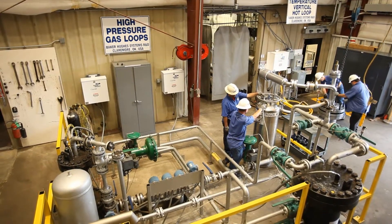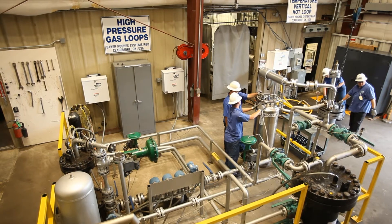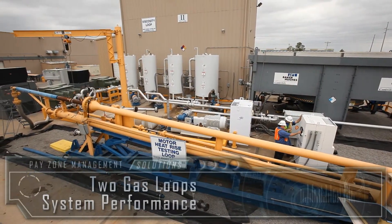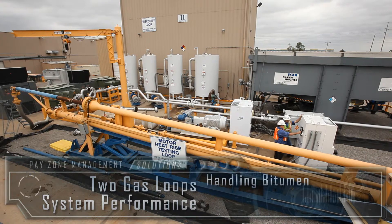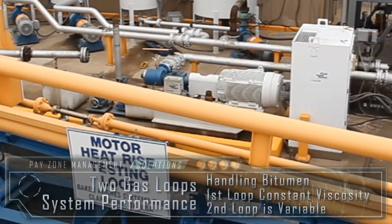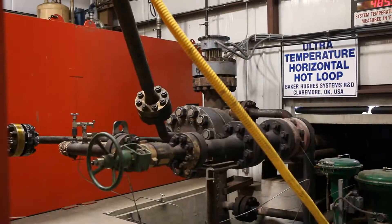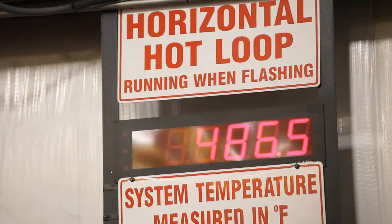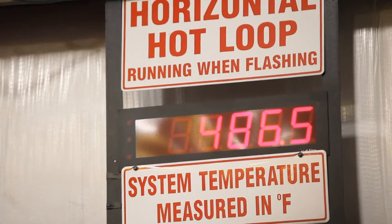The gas loop simulates pumping from wells with high gas content. Two loops are devoted to testing pump system performance in handling highly viscous bitumen. One loop maintains constant viscosity and the other loop is variable. And two hot loops test systems under simulated downhole conditions with fluid temperatures of up to 300 degrees centigrade.